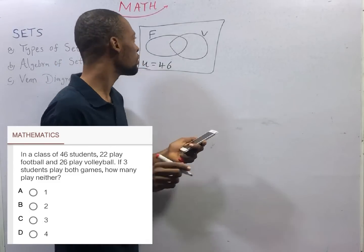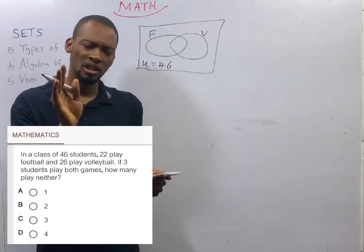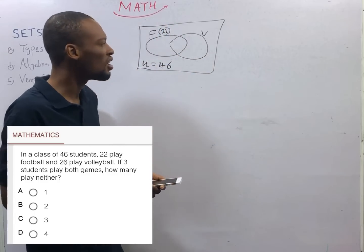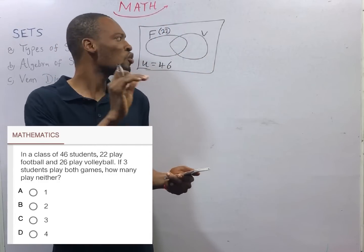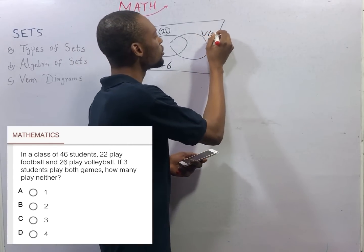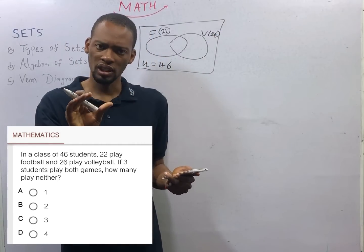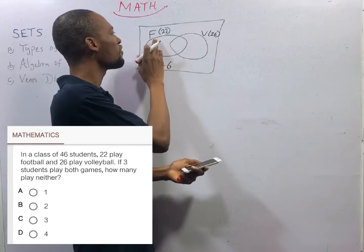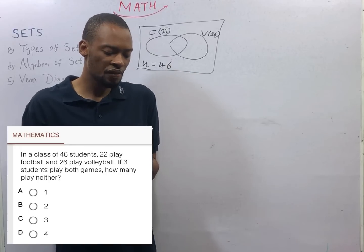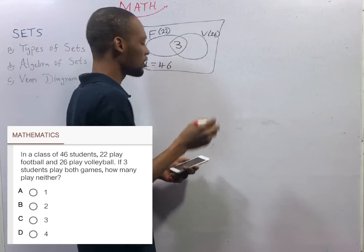22 play football. They did not say 22 play football only. They said 22 play football, which means out of this 22 playing football, there are others inside who also play volleyball. They also said that 26 play volleyball. They did not say 26 play volleyball only, which means out of this 26, there are a few of them who also play football. Finally, they said that 3 students play both games.